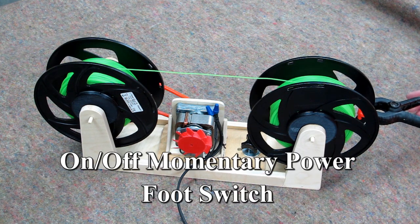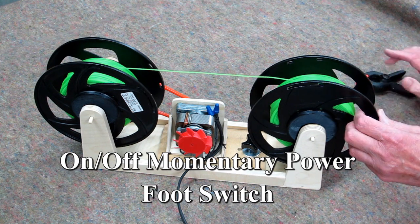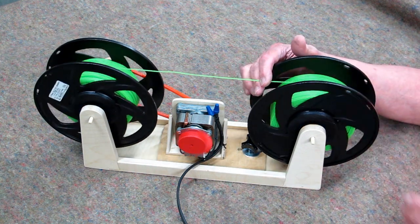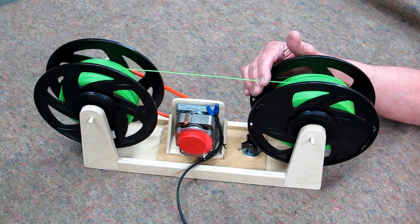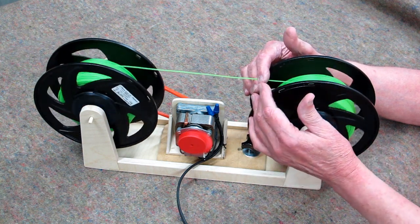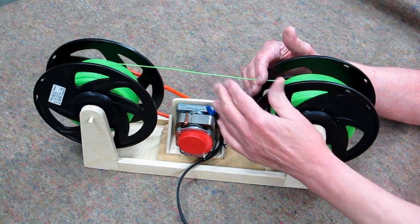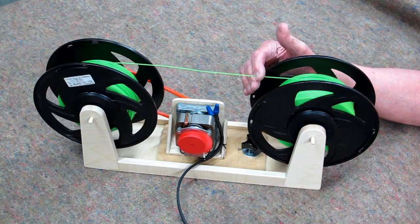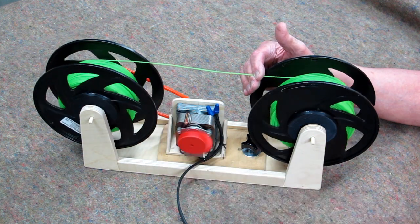Then I use a foot switch. It's an on-off dead man type switch. I just put a little pressure on this spool to keep a little tension in the filament. Let's move it back and forth on the take-up spool.